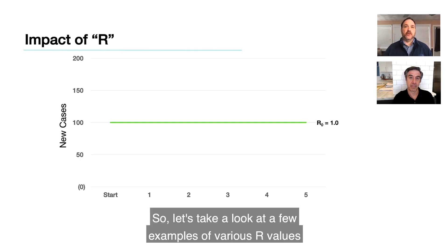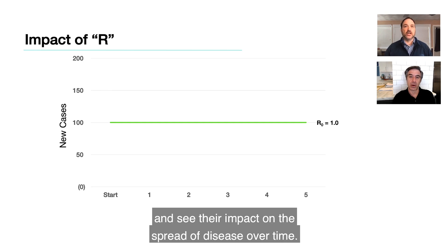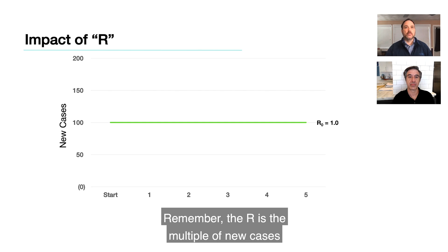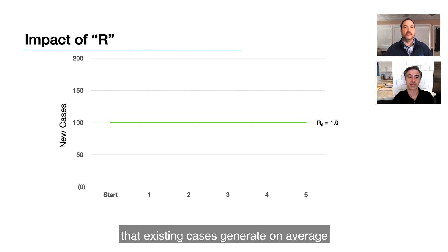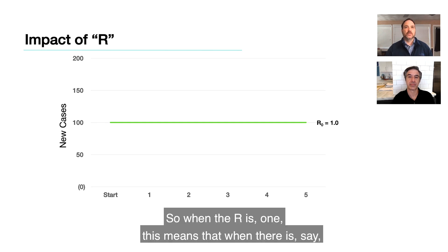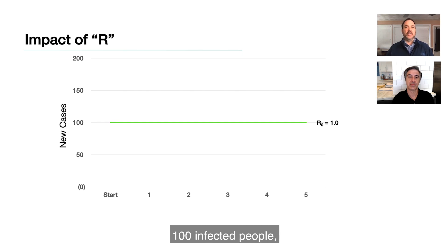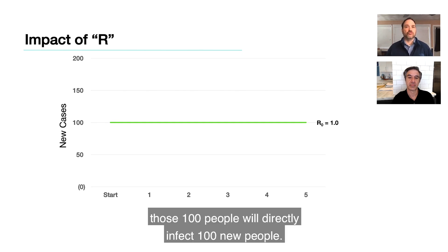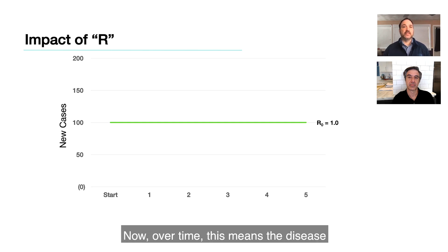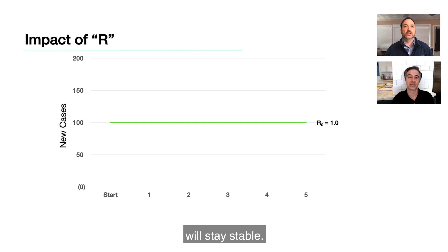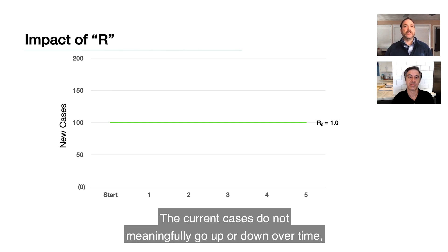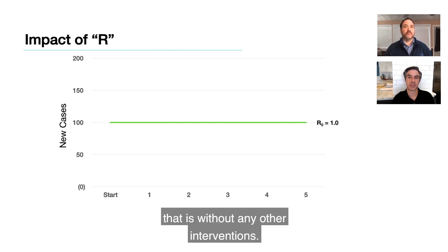Let's take a look at a few examples of various R values and see their impact on the spread of disease over time. R is the multiple of new cases that existing cases generate on average while they're infectious. So when R is one, this means that when there are, say, 100 infected people, those 100 people will directly infect 100 new people. Over time, this means the disease will stay stable — current cases do not meaningfully go up or down without any other interventions.